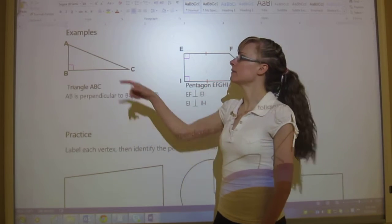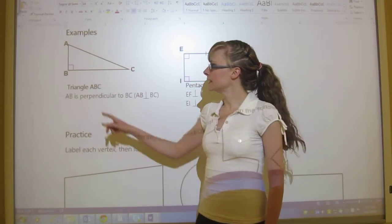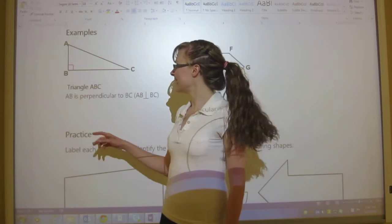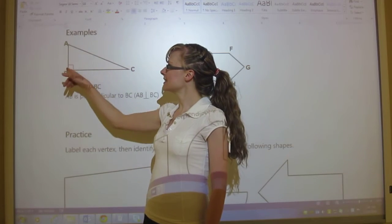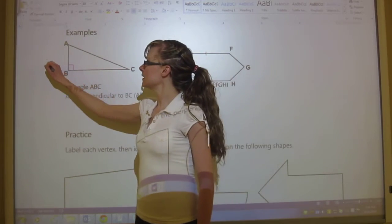Okay, so here are some examples. We've got triangle ABC here. And now we're going back to the naming. We've got ABC. So we named it correctly. And it has a perpendicular little doohickey in the corner. And so what we can say is that this side AB...